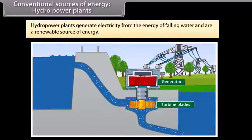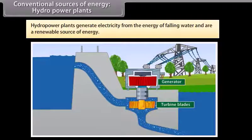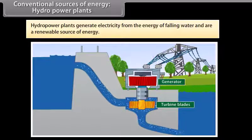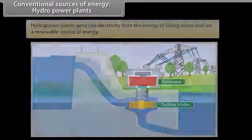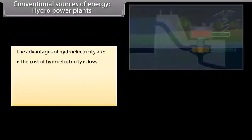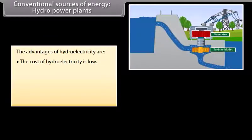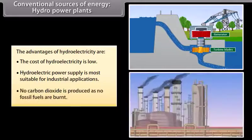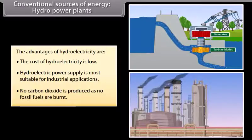Conventional sources of energy: Hydro power plants. Hydro power plants generate electricity from the energy of falling water. Hydro power is a renewable source of energy. The advantages of hydroelectricity are: the cost of hydroelectricity is low, hydroelectric power supply is more suitable for industrial applications, and no carbon oxide is produced as no fossil fuels are burnt.